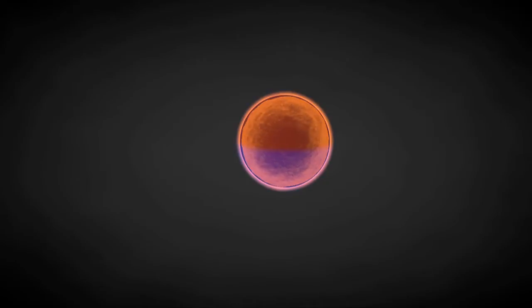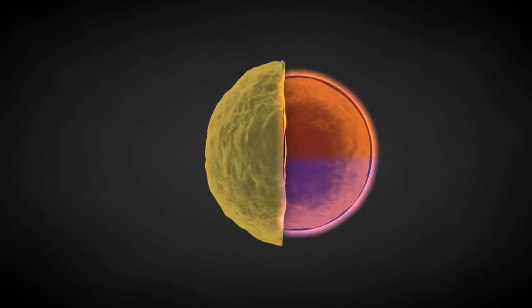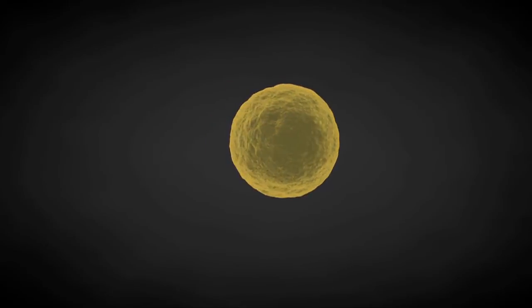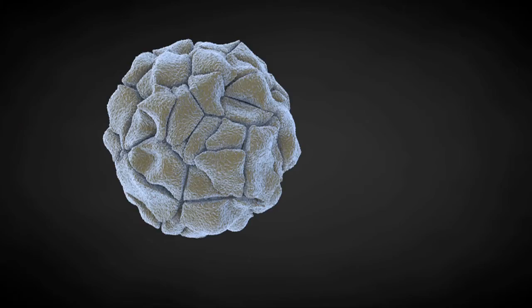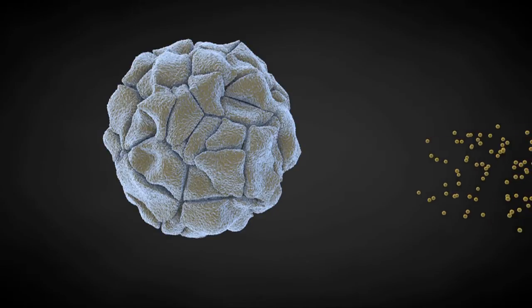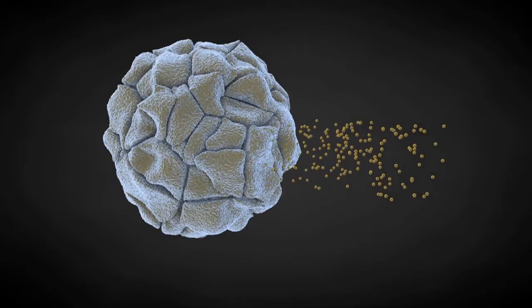First, we take iron oxide particles 500 times smaller than a red blood cell and give them a special coating that makes sure they won't clump together and that they'll be absorbed by cancer cells. When these coated particles are injected directly into a tumor, they spread out in the spaces between the tumor cells.